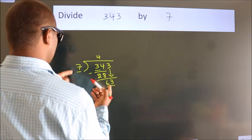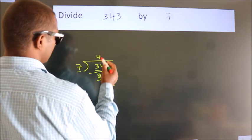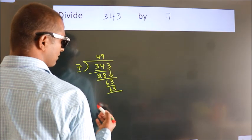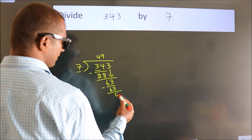When do we get 63? In 7 table, 7 nines, 63. Now we subtract. We get 0.